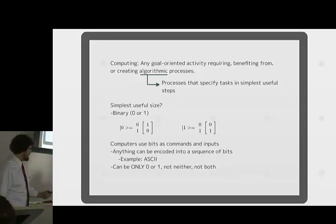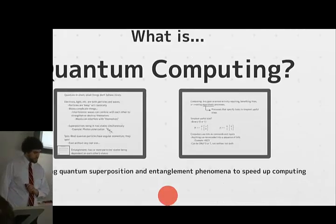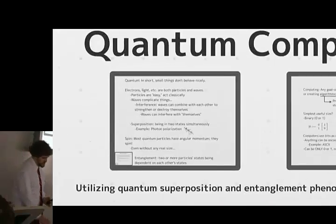So computers use bits as commands and inputs. You tell a computer what to do using bits, and you give computers the information they want with bits. And actually, anything can be encoded into bits. ASCII is the current way we encode alphanumeric characters and a few other things like the tab and blank space. The important thing about binary is that it's only 0 or 1. It can't be neither. It can't be both. It has to be one of those two matrices. So that's computing in a really quick nutshell.